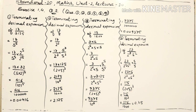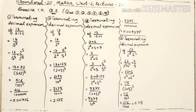For question 4, to get the terminating decimal expansion of 23 upon 2 raised to 3 into 5 squared, we require equal powers of 2 and 5. Here 2 has power 3 and 5 has power 2, so I need 1 more power of 5. I multiply 5 in both numerator and denominator. In the numerator, 23 into 5 gives 115, and in the denominator I get 2 cubed into 5 cubed, which is 10 cubed equals 1000. So after 3 decimal digits, the answer is 0.115.